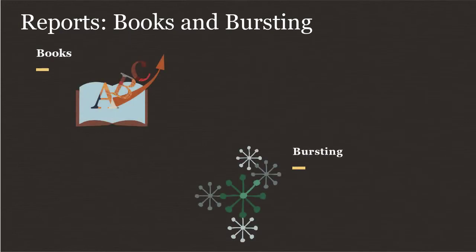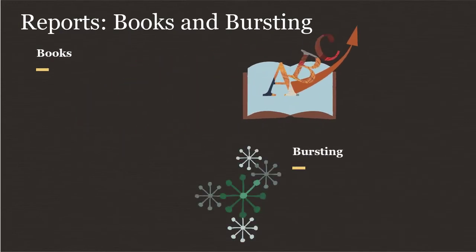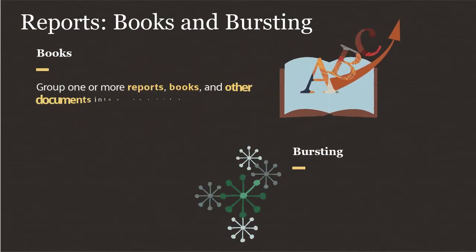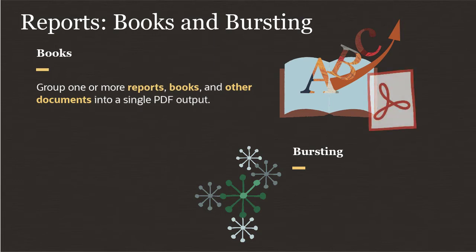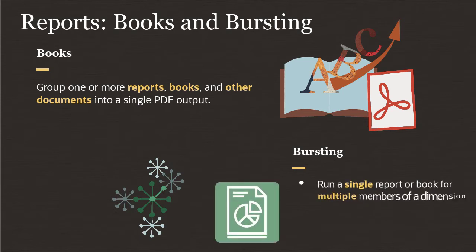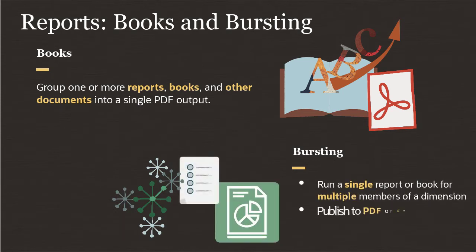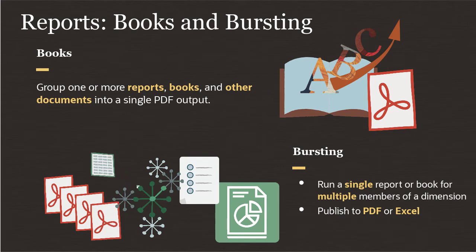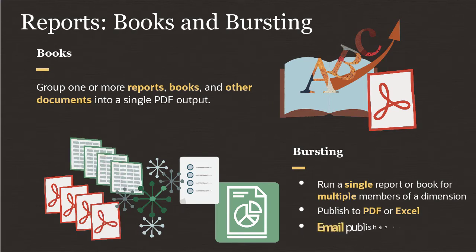Reports also includes books and bursting. Books let you group one or more reports, books, and other documents into a single PDF output. Bursting lets you run a single report or book from multiple members of a dimension. You can publish to PDF or static Excel workbooks, and with bursting you can send emails with the published output attached to a list of recipients.